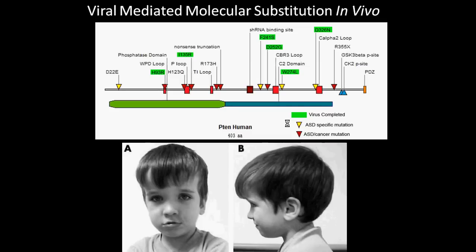Many mutations in the PTEN gene have been found in autism patients. Some of these mutations are indicated by these triangles on this schematic of the PTEN gene. This particular child has the D252G mutation shown here, and he has autism and a large head, or macrocephaly. Autism is often characterized by deficits in social interaction, delays in language acquisition, and inappropriate responses to sensory stimulation. However, the changes in the brain that underlie these complex behavioral abnormalities are not well understood.